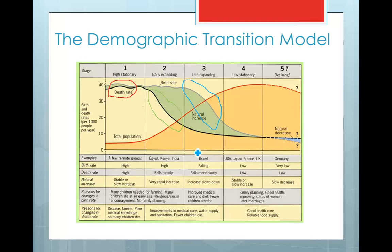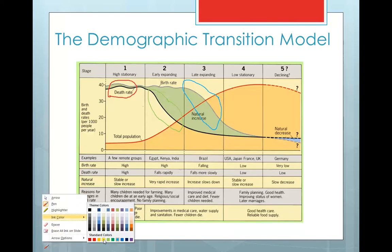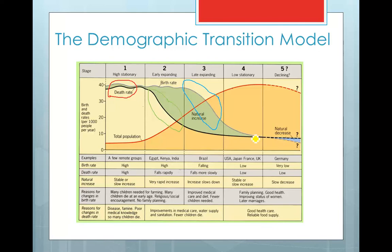This then leads us into stage four. Stage four has both a low overall birth rate and a very steady death rate. It's called low stationary and leads to, for the country, a very high total population. This is our most common stage for our more developed countries, our HICs. This is where you see USA, France, and the UK.